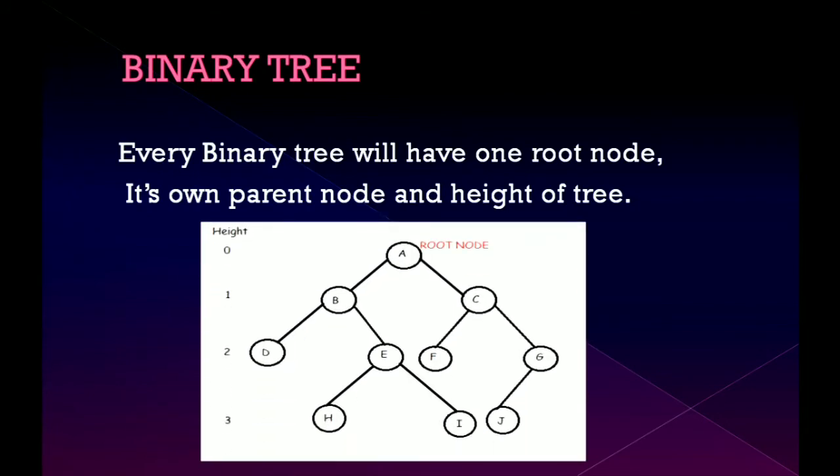If you look at this image, alphabet A is known as root node which is the base of the binary tree and which is also parent of B and C. The nodes which don't have any children are known as leaf nodes. We can see alphabet D where it doesn't have any children so it is known as leaf.